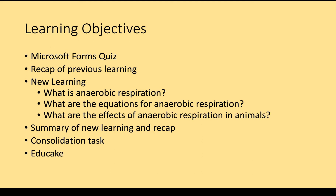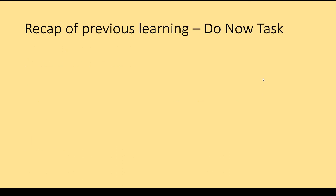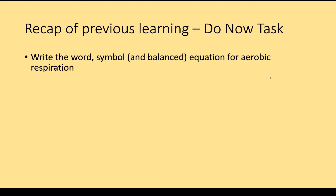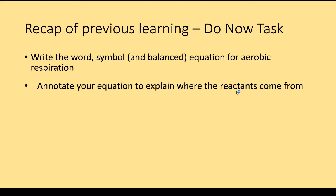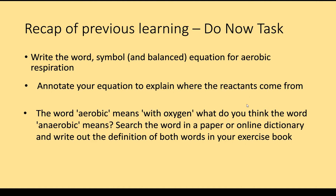New learning today is to look at what anaerobic respiration is, what the equation for it is, and what are the effects of anaerobic respiration in animals. We'll then summarise that, there'll be a short consolidation task, and then I have set you a quiz on Educate which I will introduce. For the prior knowledge task: write the word, symbol, and if possible the balanced symbol equation for aerobic respiration. Then annotate your equation to tell me where the reactants come from. The word aerobic means 'with oxygen' — what do you think anaerobic means? Search up the word in a dictionary and write out the definition of both words in your exercise book. Pause the video now and have a go at those tasks.